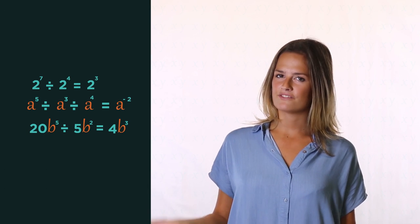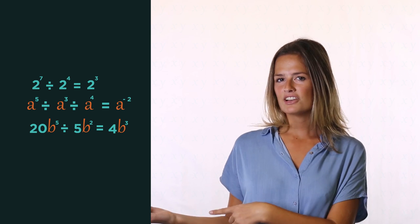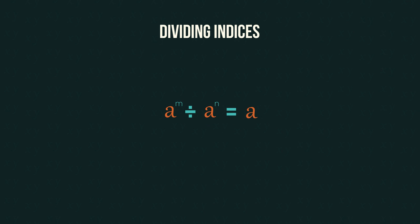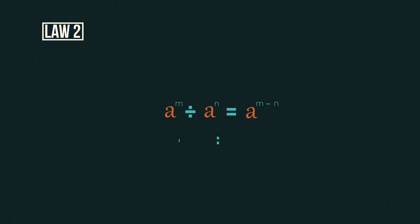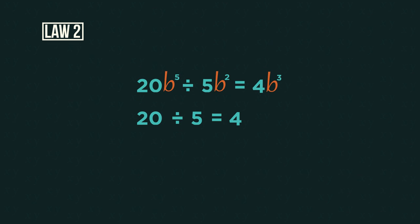So what happens when we divide with indices? Have a look and see if you can work it out. When we divide indices, we subtract the powers. But again, the base must be the same. So for this one, we do the numbers first and subtract the indices second.